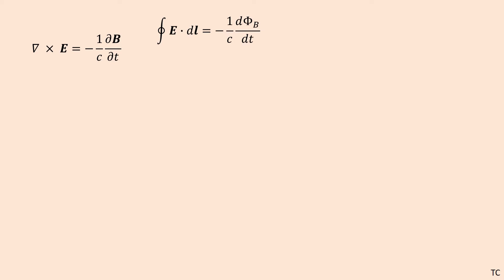So E, once again, is the electric field, dl is a small segment of length, and then phi is the magnetic flux through some area.